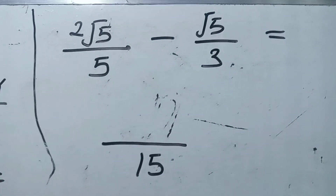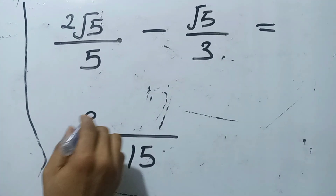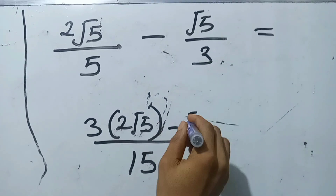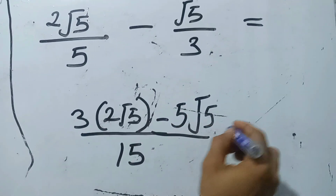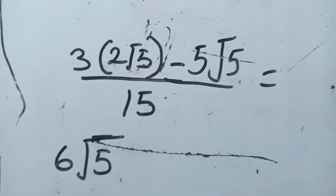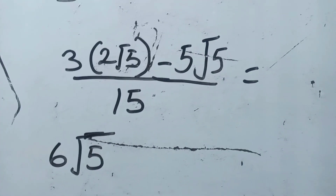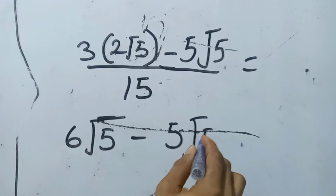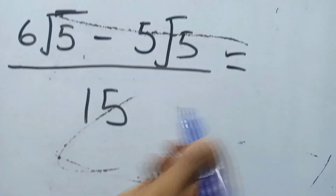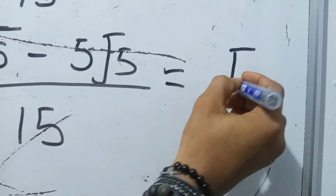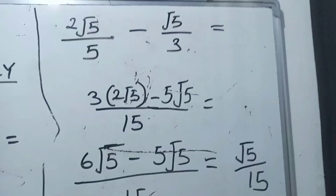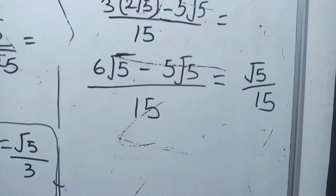Five goes into 15 three times, so we get 3 times 2√5 which is 6√5. Three goes into 15 five times, so we get 5 times √5 which is 5√5. So we have 6√5 minus 5√5 all over 15. That equals 1 times √5 over 15, which is √5 over 15. That is our final answer.